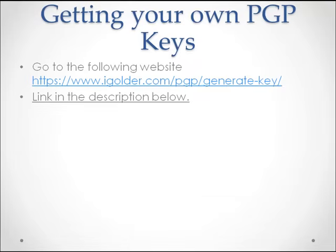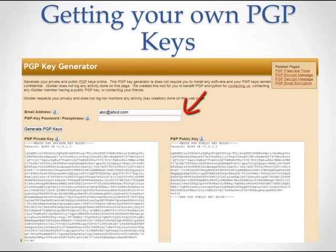In order to use PGP, you first need to get your own PGP keys. There are several ways to get your own PGP keys, but I will show you the simplest way to do it. Go to the following website — you can find the link in the description below. Type in your email and the password. To learn why you need an email and a password, just hover over the information icons. Once you're done, click on the Generate PGP Keys button.